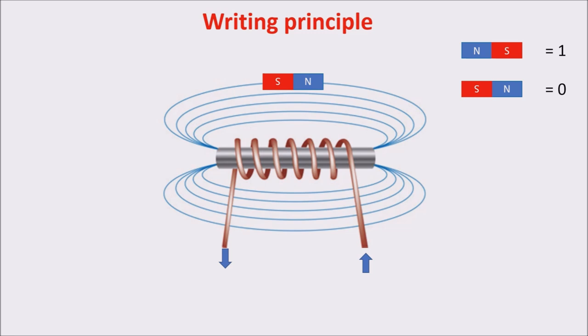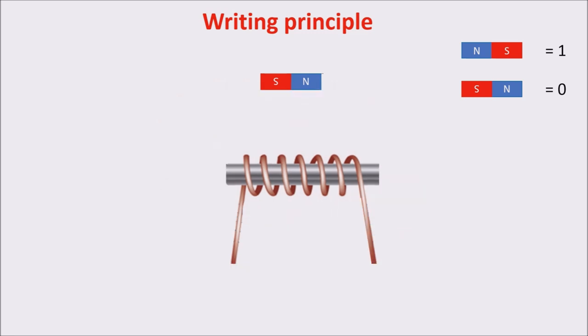The important aspect is that when no current passes through the coil, no magnetic field is created, but the magnetic material keeps its orientation, thus storing the information.